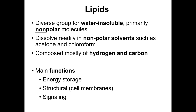Lipids are also important structurally — when we talk about the cell membrane, phospholipids are the key component of all membranes inside the cell. Finally, lipids also have a very important role in signaling. Many molecules are involved in the immune system and inflammation, such as prostaglandins, and other molecules are combined with proteins forming lipoproteins, which can be involved in signaling among different cells.